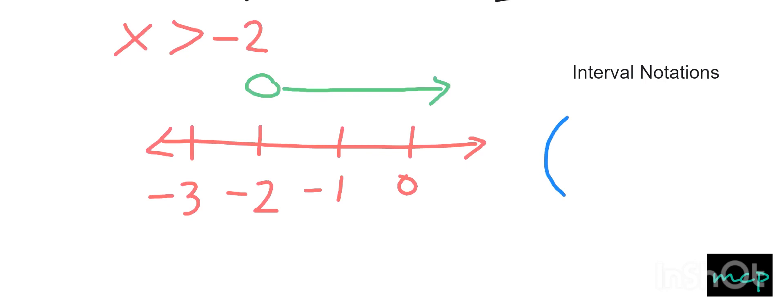So we have here negative 2 and also on the right side, since that is to the positive infinity. And of course, we also have to use an open parenthesis. So that is the interval notation on the x greater than negative 2.